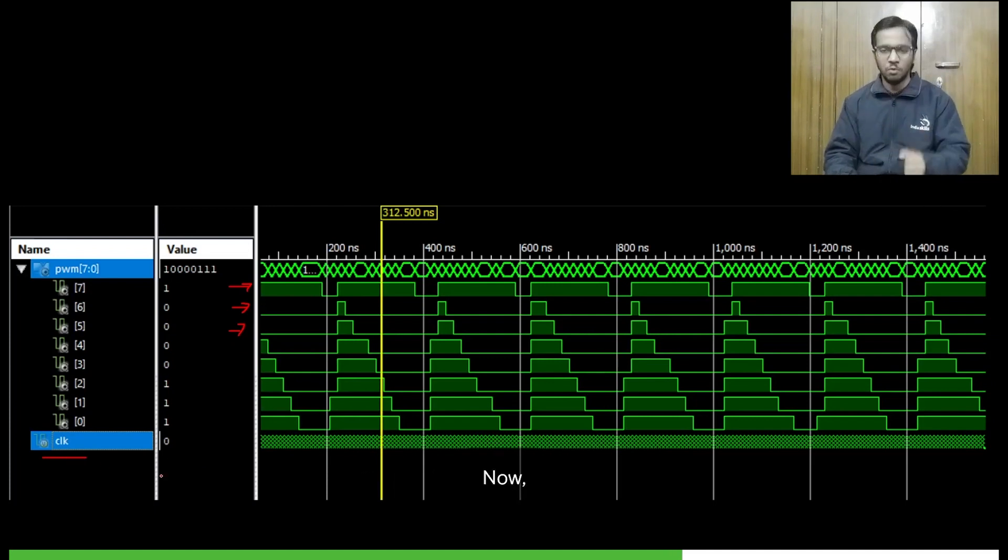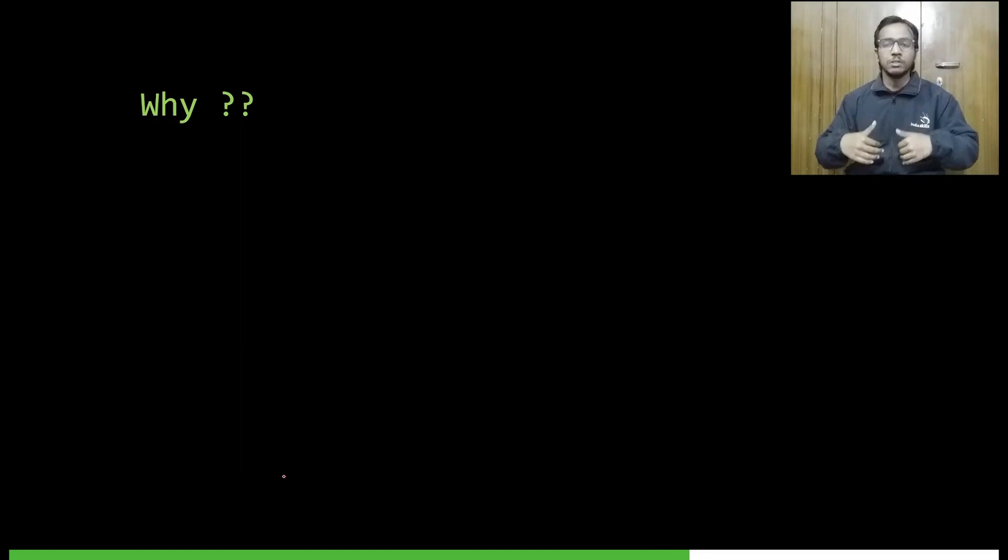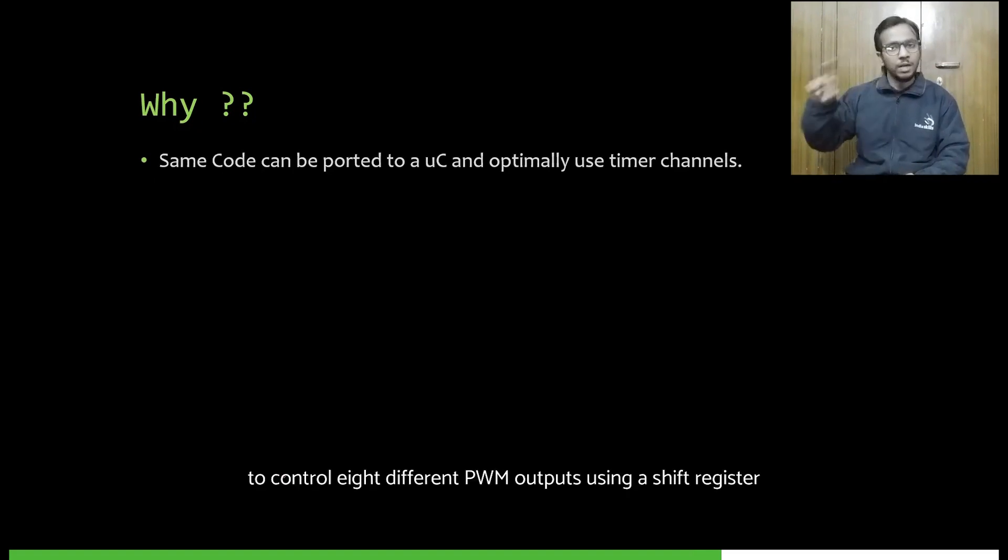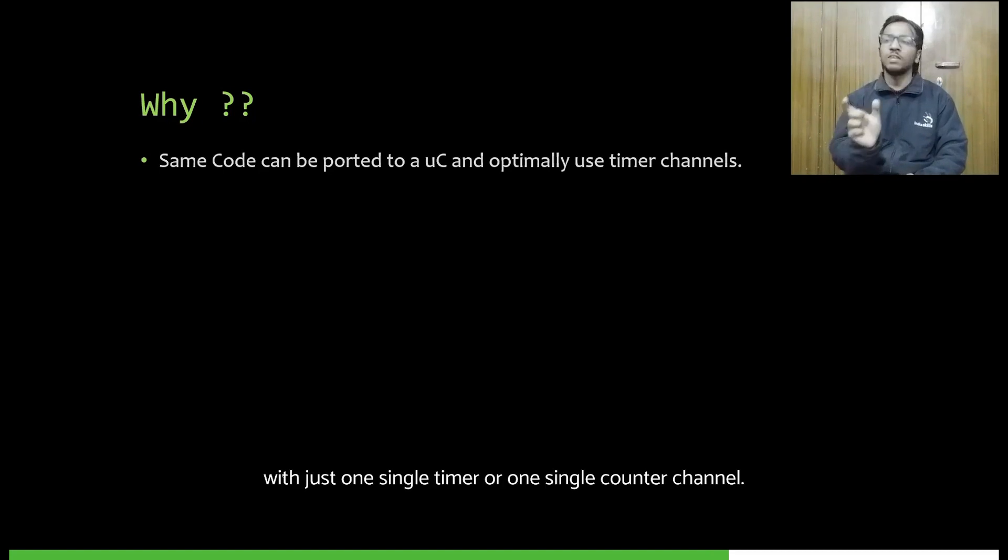Now the question: Why? Why did we make this project and why should you go for this project? The first reason is that when you talk about Verilog, it is very similar to embedded C and C. So this same code can be ported onto C and you can use that for a microcontroller to control eight different PWM outputs using the shift register with just one single timer or one single counter channel. Because you know in controllers and in microprocessors we have limited hardware, unlike in Verilog and FPGA boards where we are designing our own hardware. So when it is a hardware-intensive role, you can use the same code.